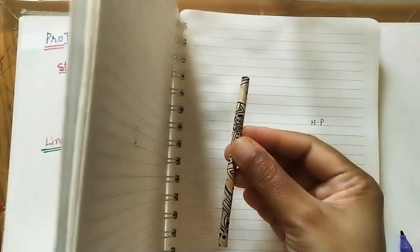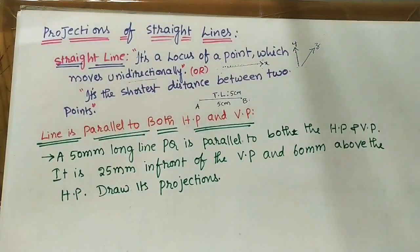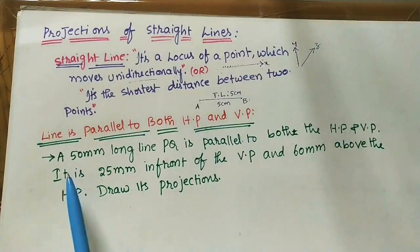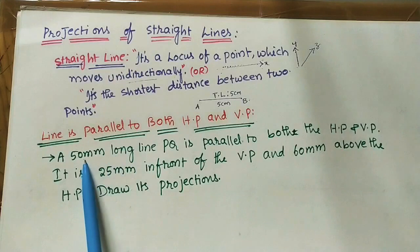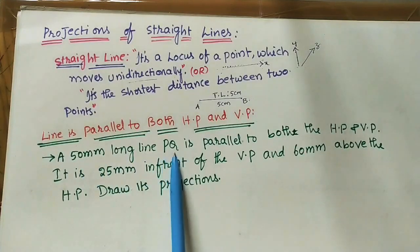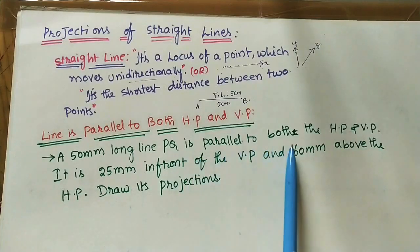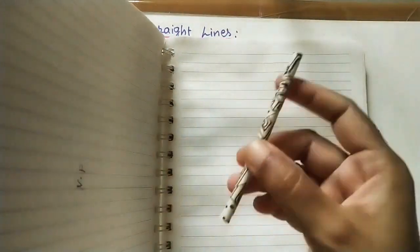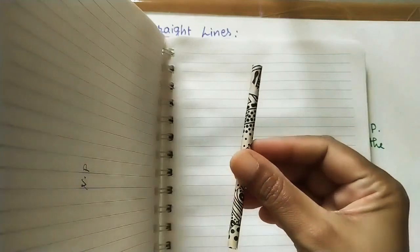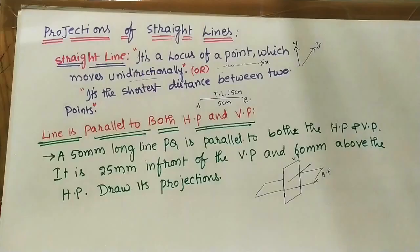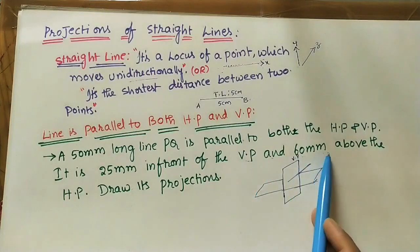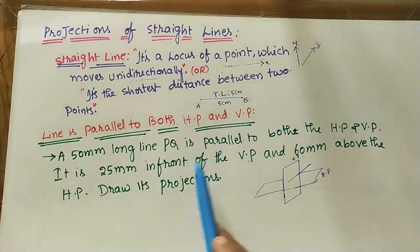We are taking the same condition: line parallel to both HP and VP. Here is the question: a 50 mm long line named PQ is parallel to both HP and VP. The line PQ is 25 mm in front of VP (vertical plane) and 60 mm above the HP.